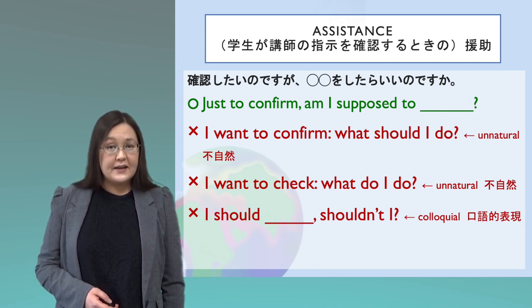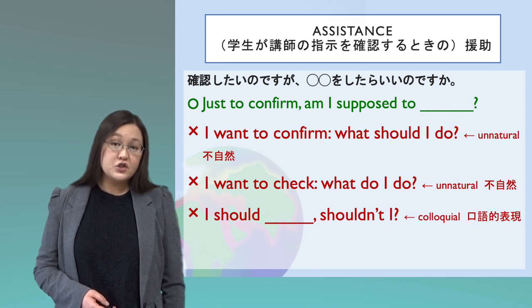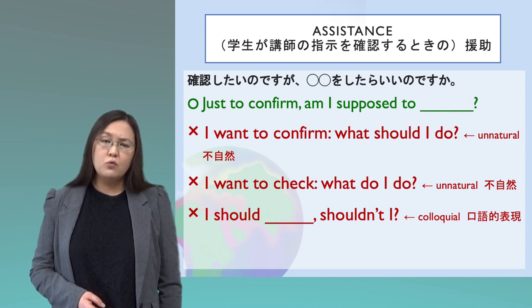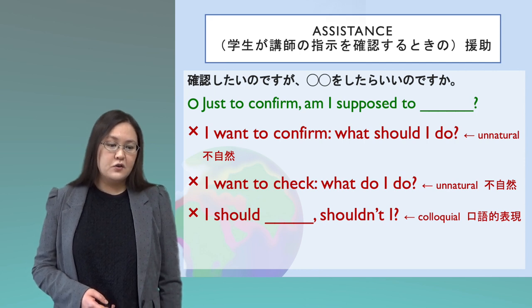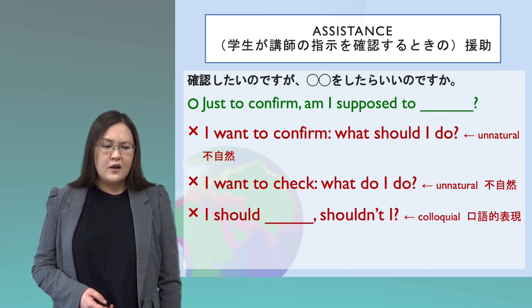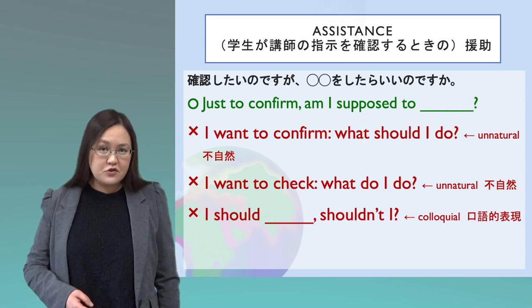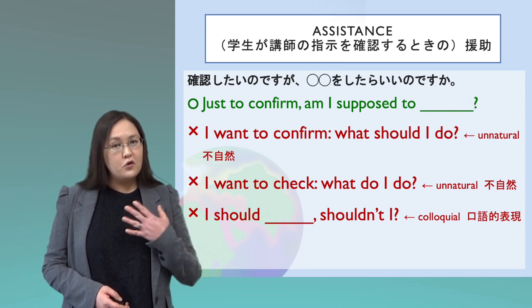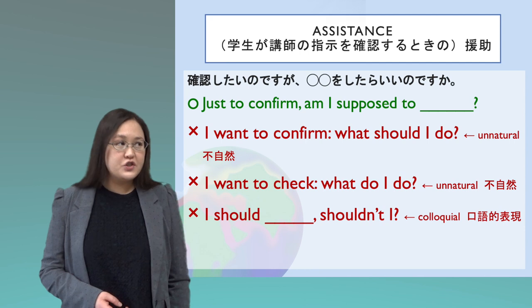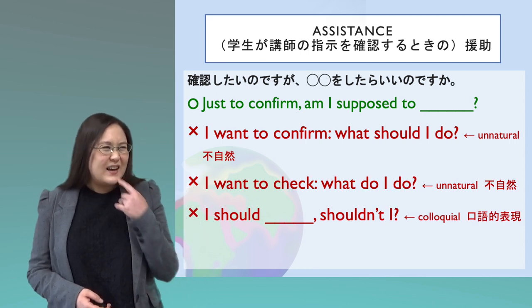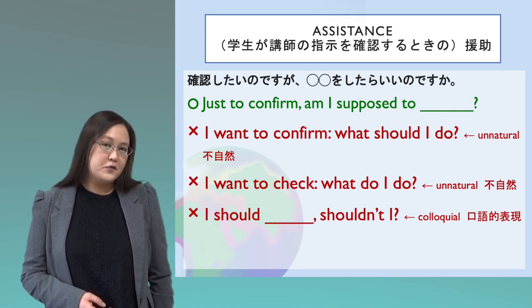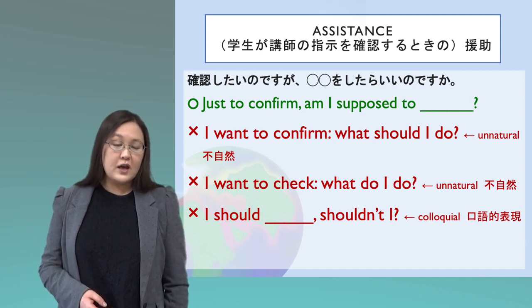So the most natural is 'Just to confirm, am I supposed to...?' Please don't say 'I want to confirm, what should I do?' — this is unnatural. Or 'I want to check, what do I do?' — also sounds unnatural. 'I should, shouldn't I?' is natural English but very colloquial — for use with friends or family, not in a university context. To your instructor, use 'Just to confirm, am I supposed to...?'